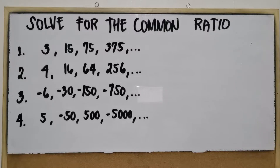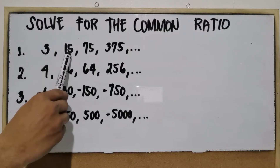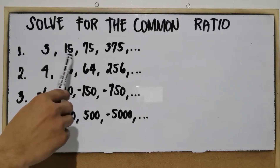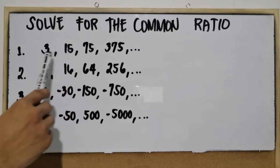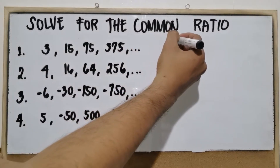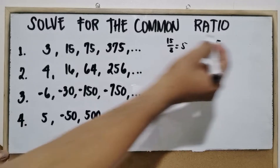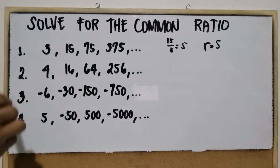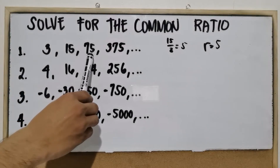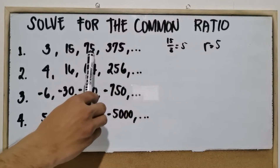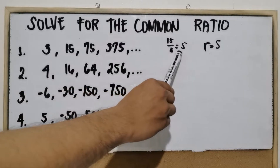Now let's solve for the common ratio. Number 1: the given geometric sequence is 3, 15, 75, 375. To solve for the common ratio, we divide the second term by the first term. 15 divided by 3 equals 5. So the common ratio is 5. You can also use other terms — the third divided by the second, or the fourth divided by the third — and the answer will still be 5.